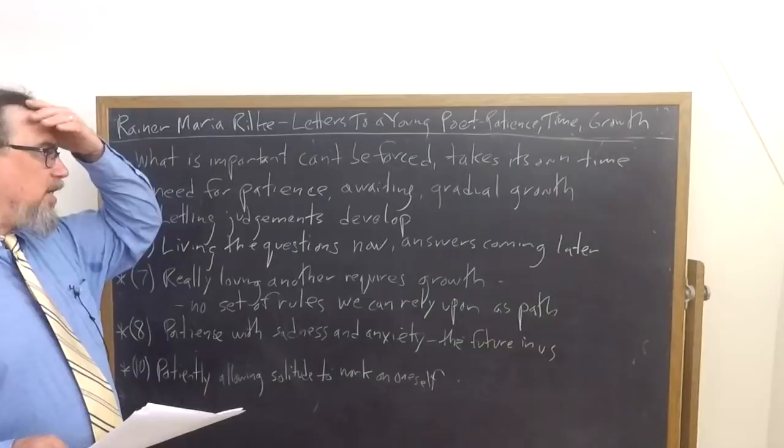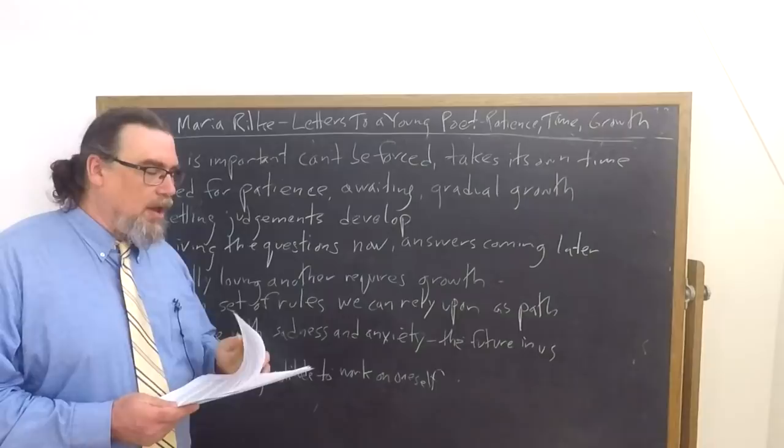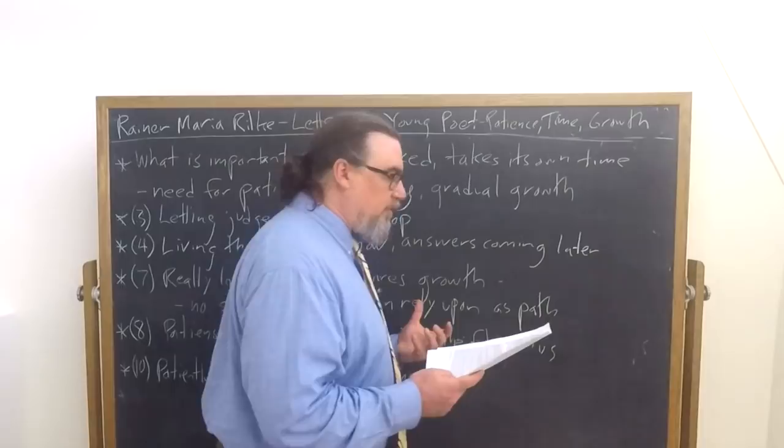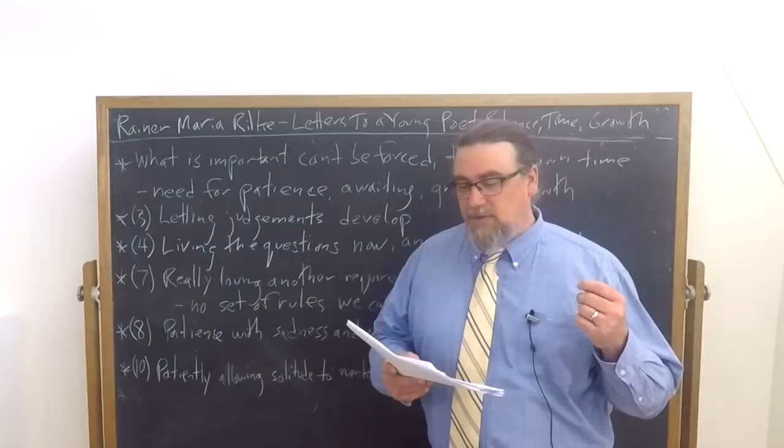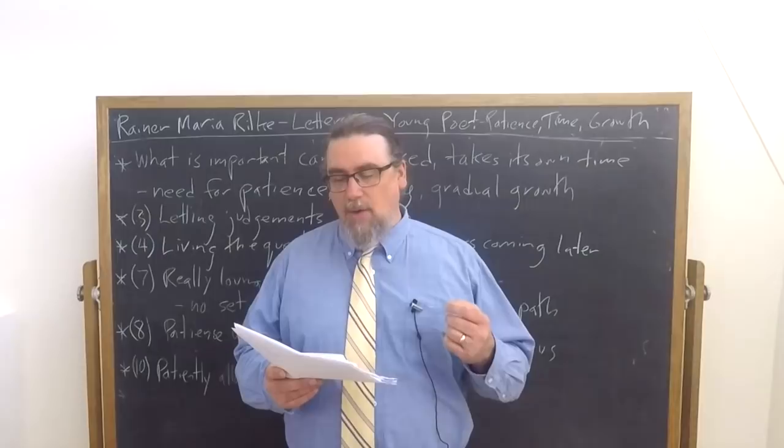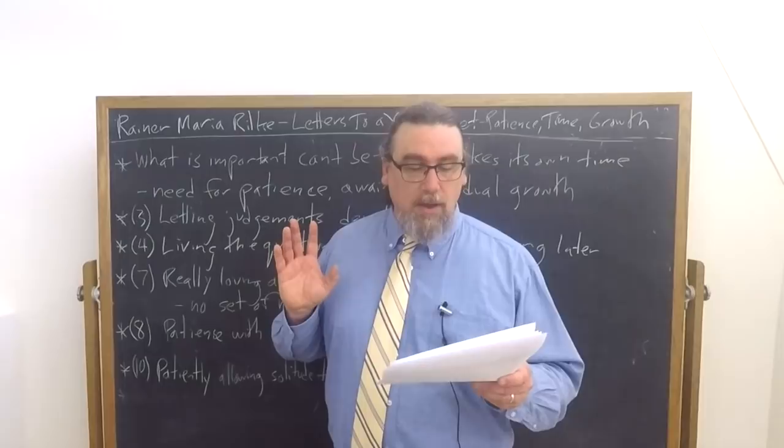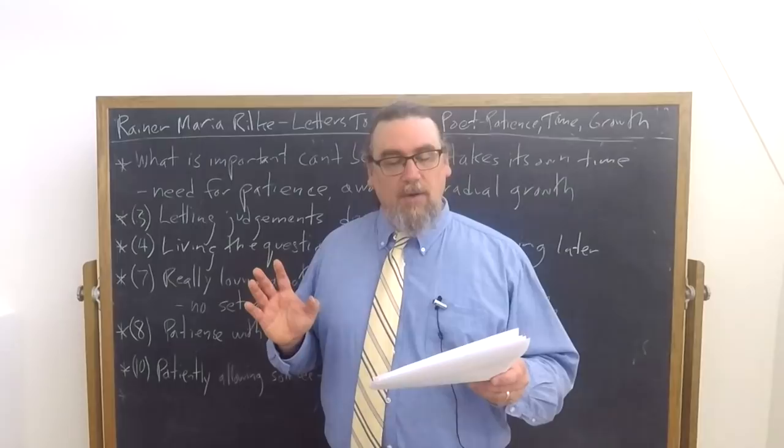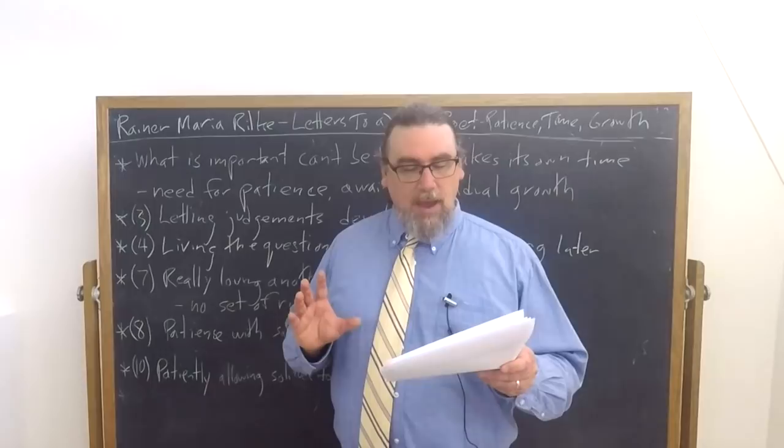A little bit later in letter eight, he also talks about sadness and he brings up anxiety as well. He says that sadness and anxiety are times when the future is entering into us and we have to allow things to grow within us. He says it's important to be solitary and attentive when one is sad because the seemingly uneventful and motionless moment when our future steps into us is so much closer to life than other loud and accidental point of time. When it happens to us as if from outside, the quieter we are, the more patient and open we are in our sadness, the more deeply and serenely the new presence can enter us. The more we can make it our own, the more it becomes our fate. And later on when it happens, that is steps forth out of us to other people, we will feel related and close to it in our innermost being.